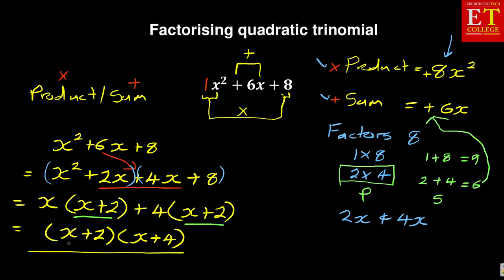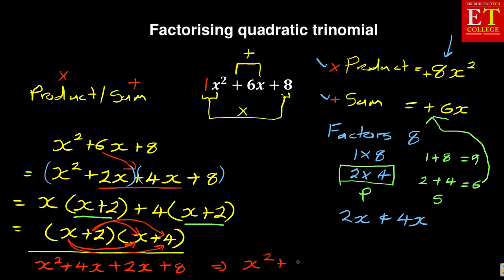To prove your answer is correct, you can expand: x multiplied by x gives x squared, x multiplied by four gives four x, two multiplied by x gives two x, and two multiplied by four gives eight. Four x plus two x gives six x, so altogether you get x squared plus six x plus eight — the same expression we started with. This confirms the concept of the product and the sum.